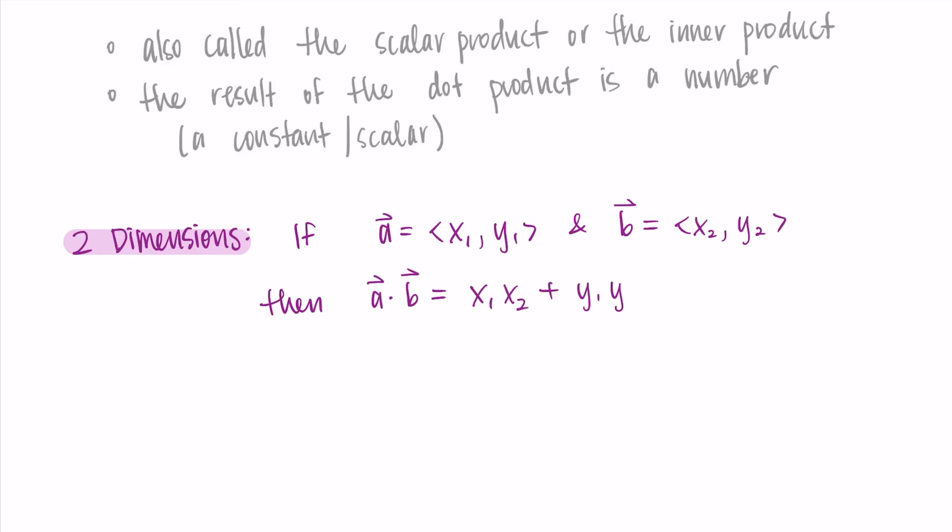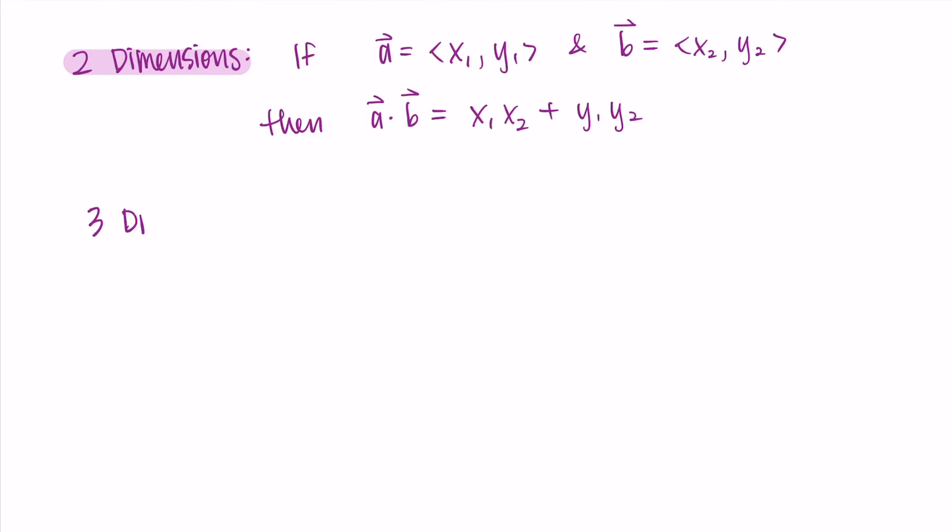So that's x1 times x2 plus y1 times y2. Just multiply the x components and add it to the product of the y components.